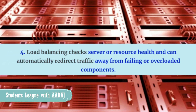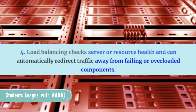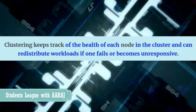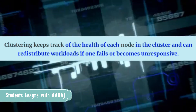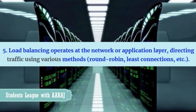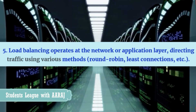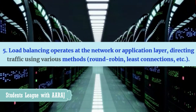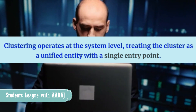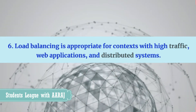Load balancing checks server or resource health and can automatically redirect traffic away from failing or overloaded components. Clustering keeps track of the health of each node in the cluster and can redistribute workloads if one fails or becomes unresponsive. Load balancing operates at the network or application layer directing traffic using various methods — round-robin, least connections, etc. — while clustering operates at the system level, treating the cluster as a unified entity with a single entry point.